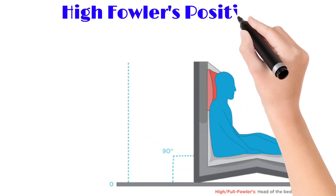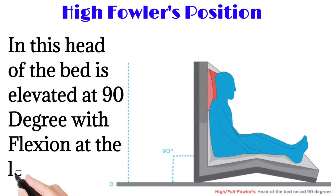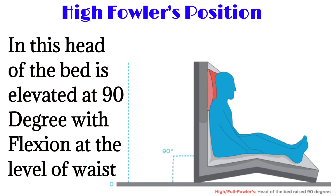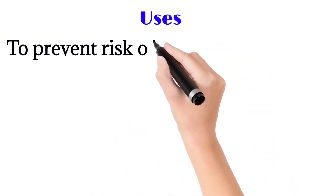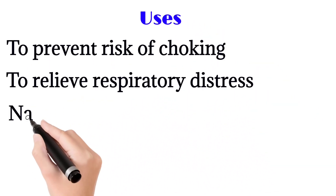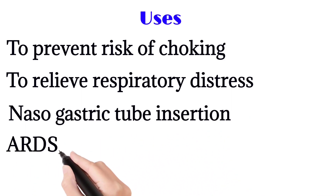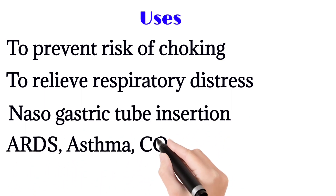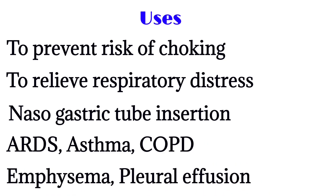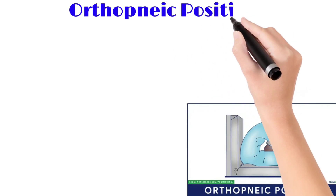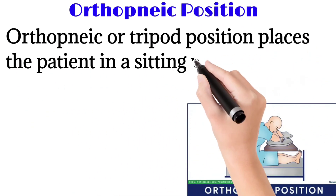Next is the high Fowler's position — the head of the bed is elevated at 90 degrees with flexion at the level of the waist, with back completely straight. Uses include to prevent risk of choking, relieve respiratory distress, nasogastric tube insertion, ARDS, asthma, COPD, empyema, and pleural effusion — all respiratory-related conditions.